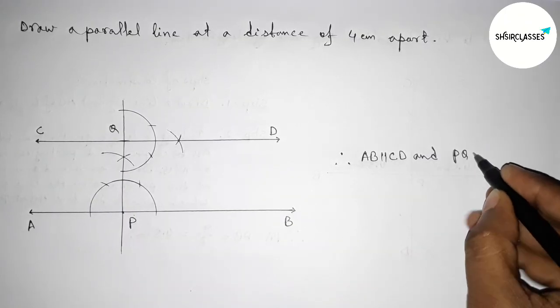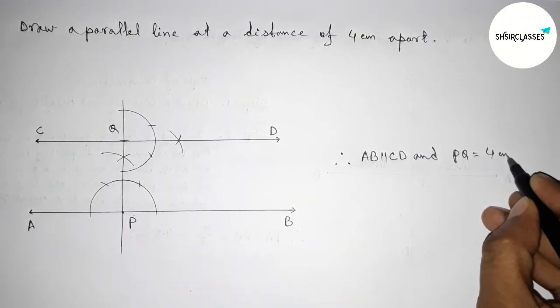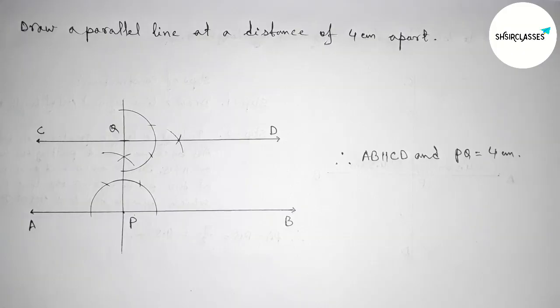From this picture we can say that AB and CD are parallel lines to each other. So AB is parallel to CD, and the length PQ equals 4 centimeters. That's all — thanks for watching. If this video is helpful to you then please share it with your friends.